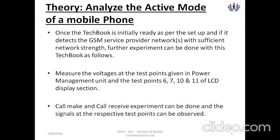First, we will look into the active mode. Once the tech book is initially set up, it starts detecting your signal and you will see signal bars on the screen. Once you have sufficient network strength, we proceed with functionality checking for the active mode. You will have test points numbered 6, 7, 10, and 11 just beside the LCD display.